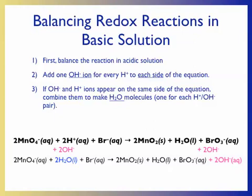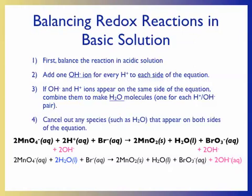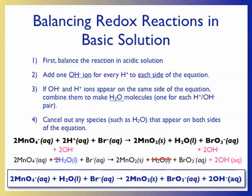We now have an equation balanced under basic conditions. Our next step is cleanup: cancel any species appearing on both sides. After balancing in basic solution, we typically have excess water molecules. For our example, we cancel the water molecule on the right-hand side and one water molecule on the left, giving the final result: two permanganate ions plus a water molecule plus a bromide ion yields two MnO2 formula units, a bromite ion, and two hydroxide ions. The equation is now balanced under basic conditions.